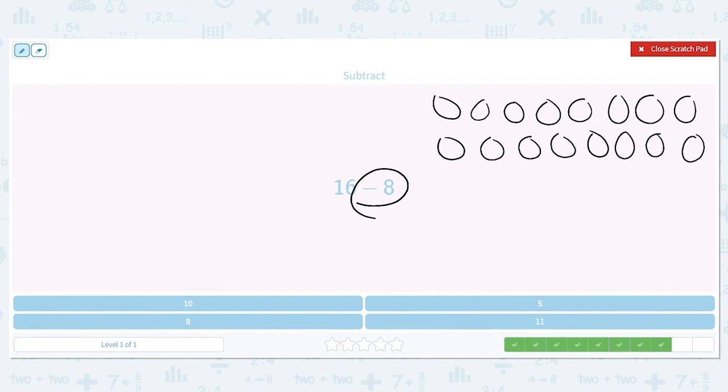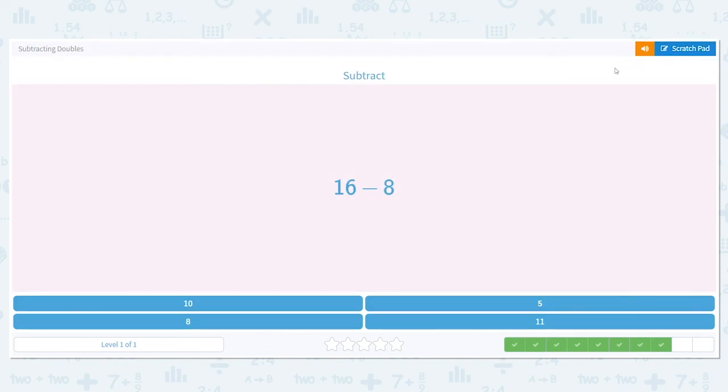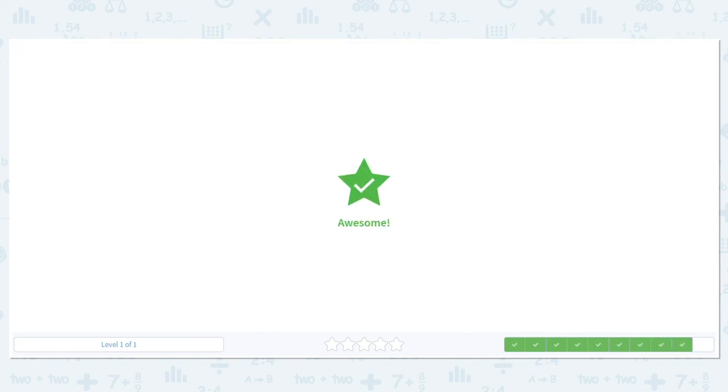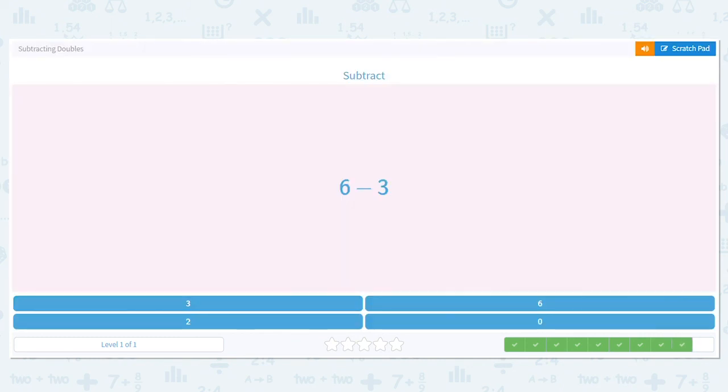So let's cross them out. Count with me: 1, 2, 3, 4, 5, 6, 7, 8. So 16 minus 8 equals 8.